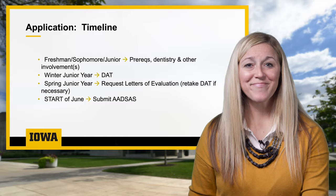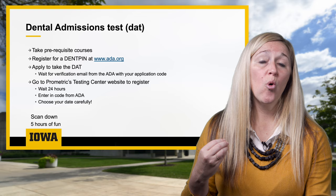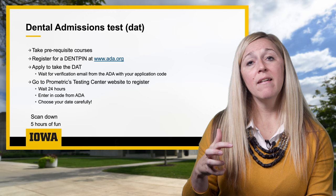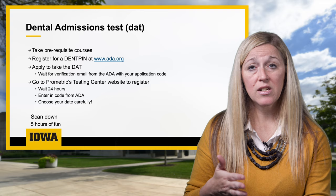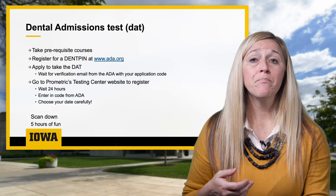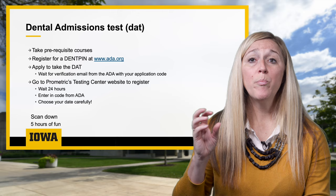So you register for your Dent Pin, apply to take the DAT, and then go to a Prometric Testing Center to take it. You have to schedule this in advance — if you need to change the date, there is a fee associated with that. Do some research in advance: you're going to be scanned down, you'll need forms of ID, and it's an extensive five-hour test. Chat with other pre-dental students who have already taken the DAT — they'll have lots of great advice.